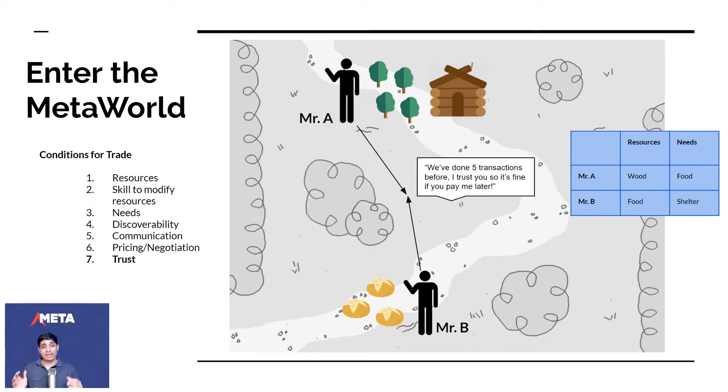The next thing that happens is trust. Assume this transaction happens. Assume this one house to 30 potatoes transaction happens. Then the element of trust kicks in, which is we've done five transactions before, I trust you. So it's fine if you pay me later. And that's the thing about human social connections. Trust increases the speed of trade. When you trust somebody, you trade faster. There's less negotiation. There's less language involved. And you kind of already know the other person's need in advance.